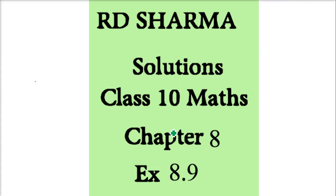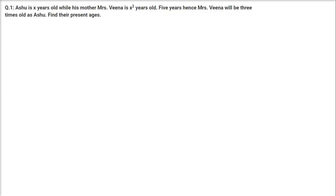We are taking R.D. Sharma's solution, class 10 maths. This is chapter number 8, exercise 8.9. The first question is: Ashu is X years old while his mother Mrs. Veena is X square years old. 5 years hence, Mrs. Veena will be 3 times as old as Ashu. Find their present ages.